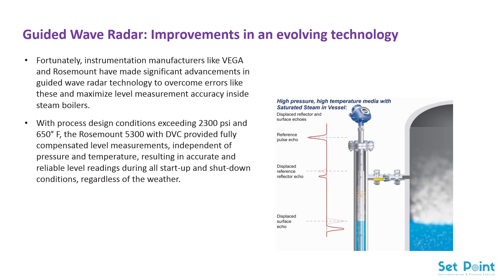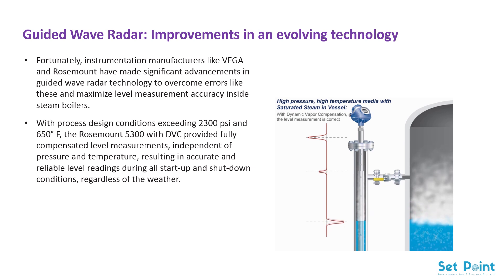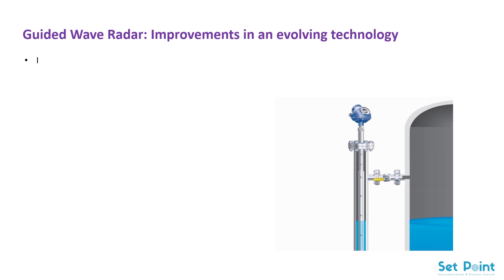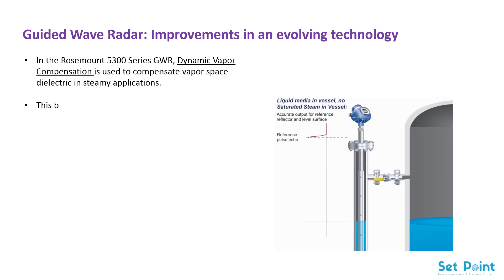The final result is a reliable and safe level measurement for all your boiler's high-pressure feed water heaters and steam separators. In the Rosemount 5300 series GWR, dynamic vapor compensation is used to compensate vapor space dielectric in steamy applications.